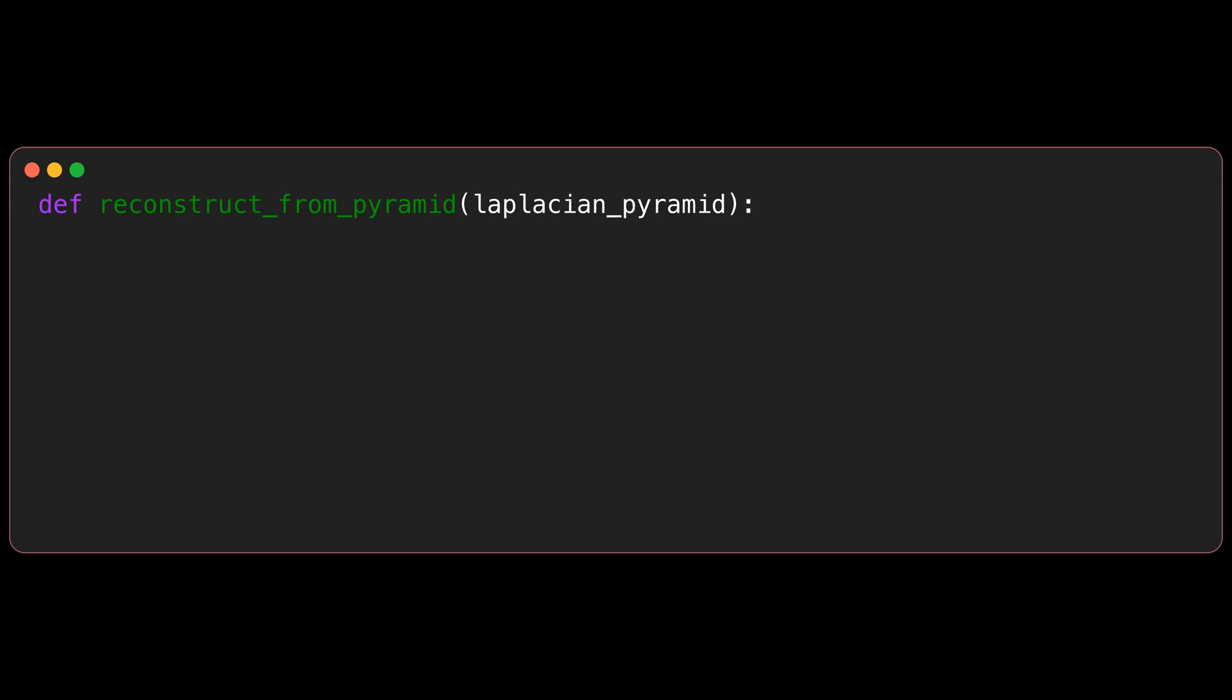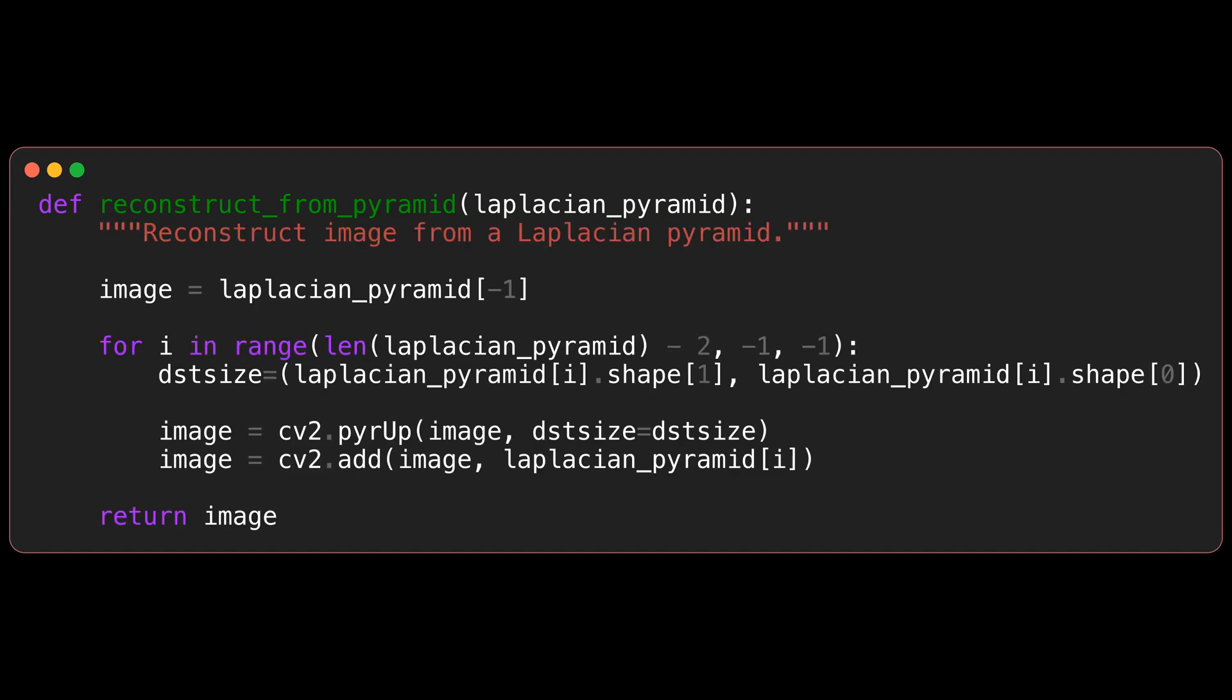As a final step, we can reconstruct the high-resolution image from the blended Laplacian pyramid. We start with the last level of the Laplacian pyramid. This image has the lowest spatial resolution. We then work our way up one level at a time. For each level, we upsample the lower resolution image to the size of the current level and add the details back. With this process, we can reconstruct the high-resolution blended image.